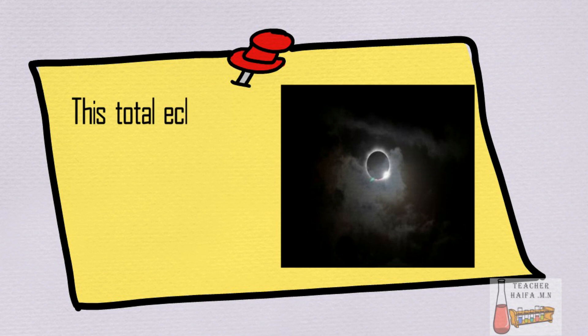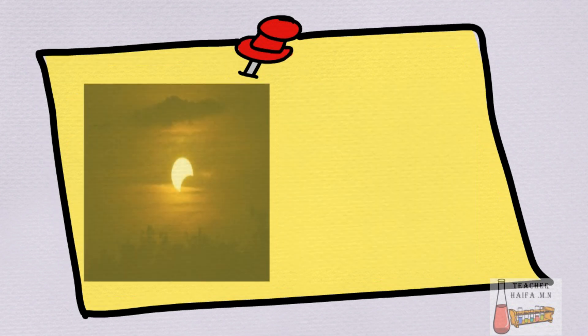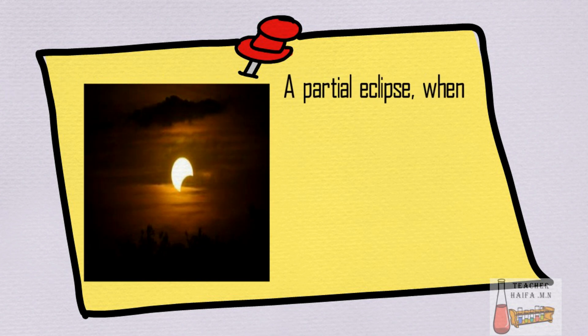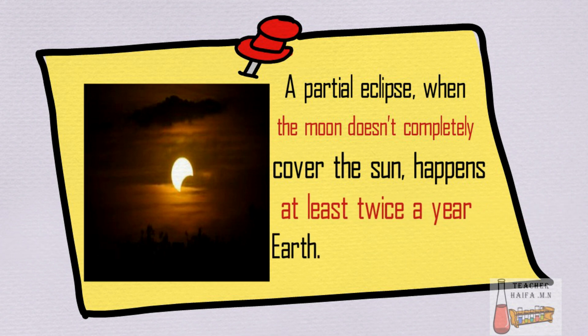This total eclipse happens about every year and a half somewhere on Earth. A partial eclipse, when the moon doesn't completely cover the sun, happens at least twice a year somewhere on Earth.